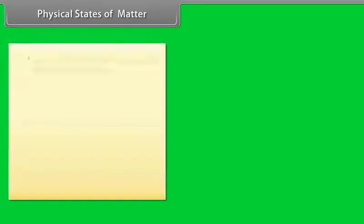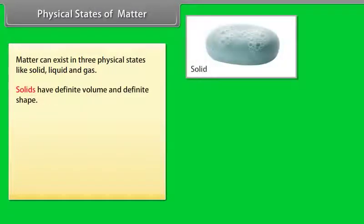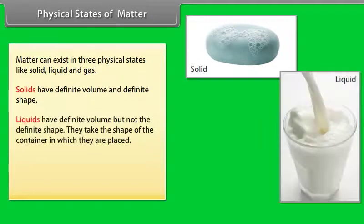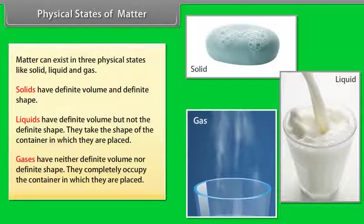Matter can exist in three physical states like solid, liquid and gas. Solids have definite volume and definite shape. Liquids have definite volume but not the definite shape. They take the shape of the container in which they are placed. Gases have neither definite volume nor definite shape. They completely occupy the container in which they are placed.